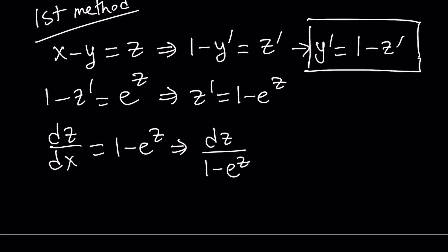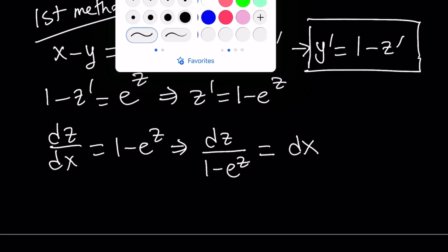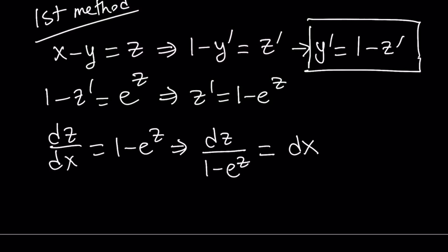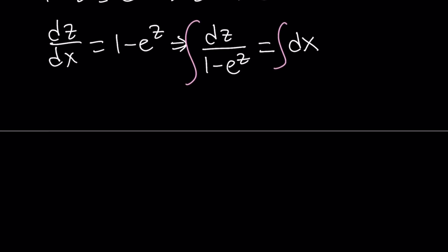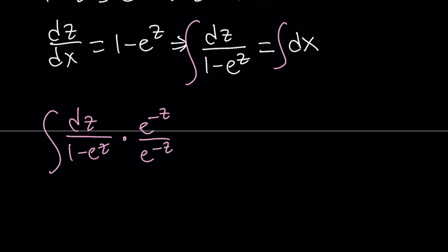From here we're going to separate the variables because this is a separable equation and very easy to solve. So we're going to write it as dz over 1 minus e to the power z equals dx. And then we are going to integrate both sides. Now when we integrate the left-hand side, how do you integrate 1 over 1 minus e to the power z? Let's integrate that function by using a clever manipulation — multiply the top and the bottom by e to the power of negative z.